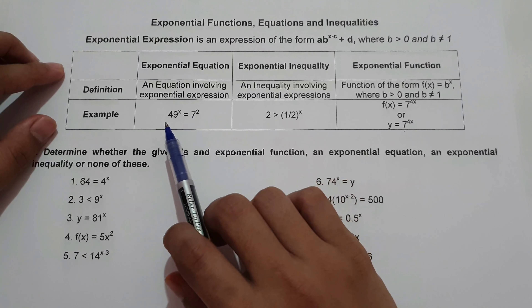What about exponential inequality? An exponential inequality is an inequality involving an exponential expression. For example, 2 is greater than one-half raised to x. As you can see, the inequality symbol is greater than.